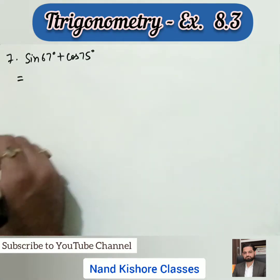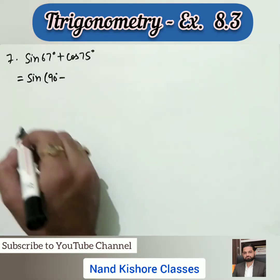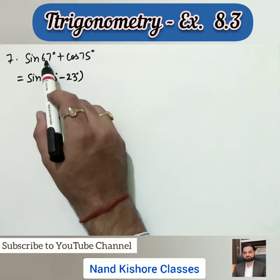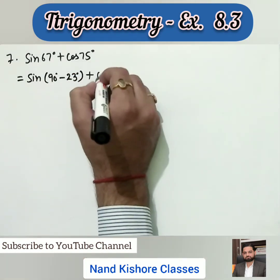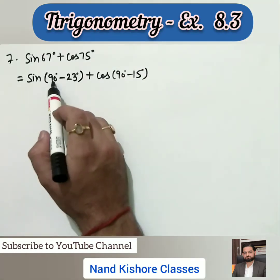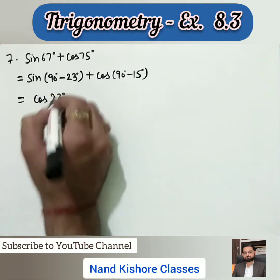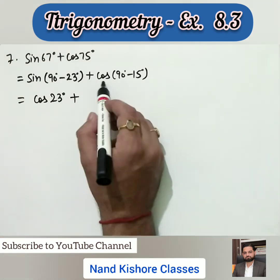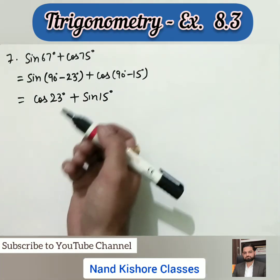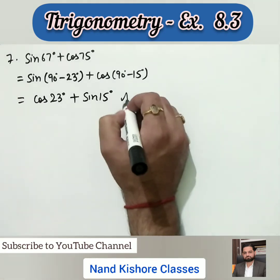For 67°, I write it as 90° - 23°, since 90 - 23 = 67. For cos(75°), I write 90° - 15°. Using the identity sin(90° - θ) = cos(θ), sin(90° - 23°) becomes cos(23°). And using cos(90° - θ) = sin(θ), cos(90° - 15°) becomes sin(15°). So the final answer is cos(23°) + sin(15°). The angles 23° and 15° are both between 0° and 45°.